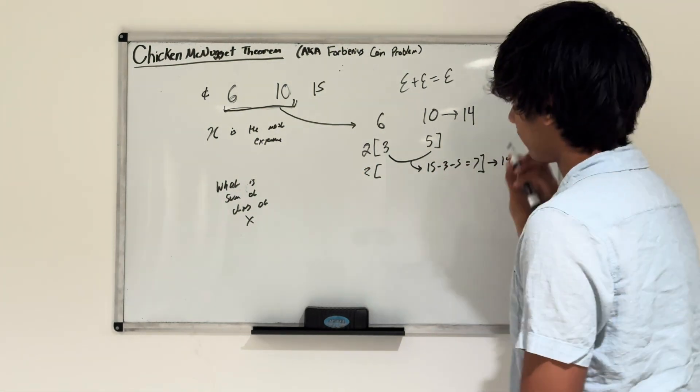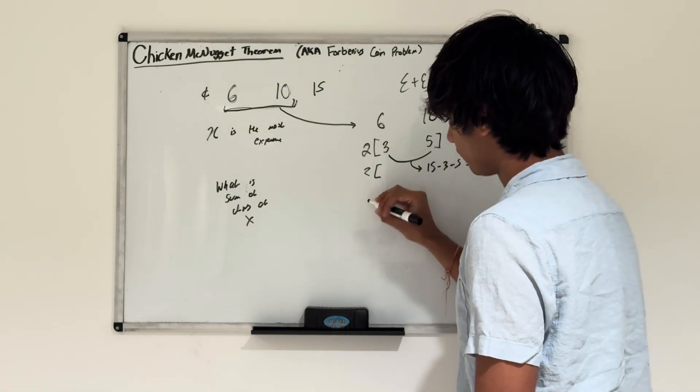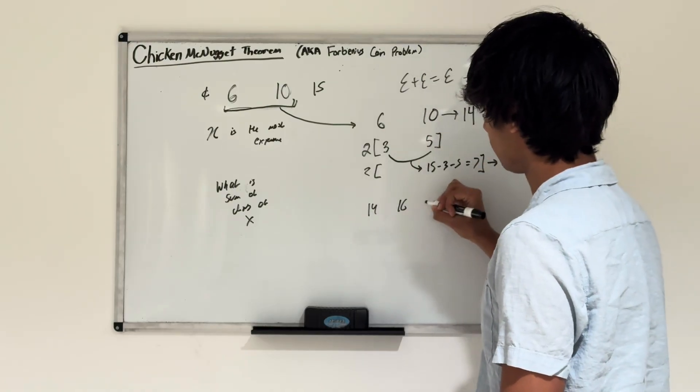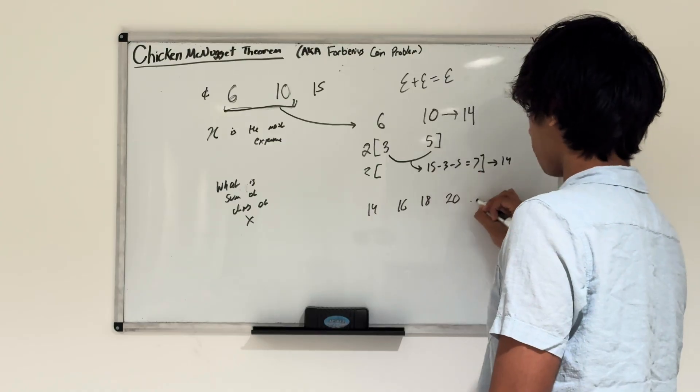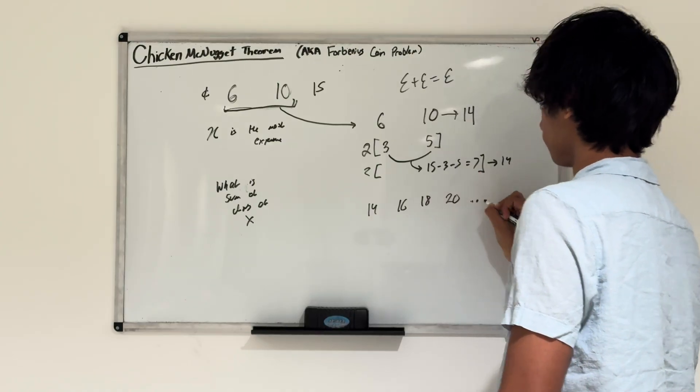Using 6 and 10, we can make all the even numbers after 14. We can make 16 (6 plus 10), we can make 18 (6 times 3), we can make 20 (2 tens). We can make all those even numbers infinitely forever.